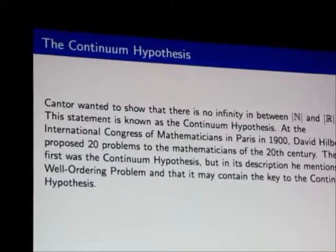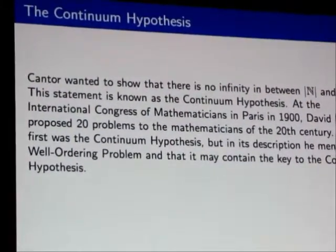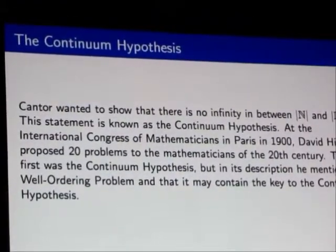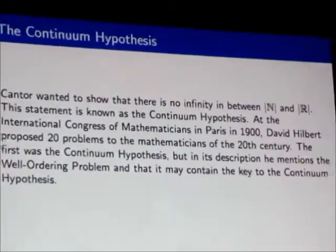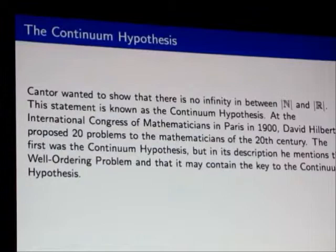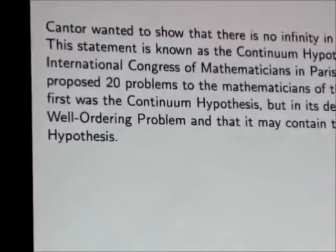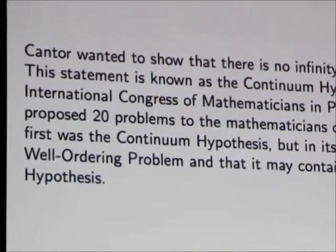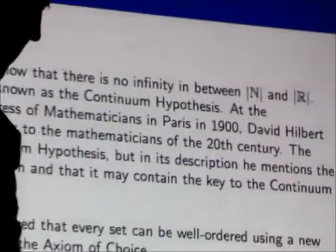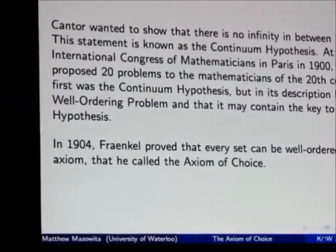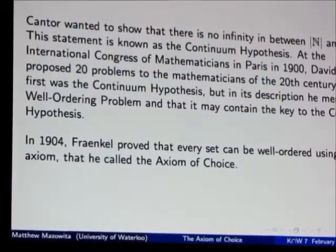Cantor wanted to show that there was no infinity strictly between the infinity of counting numbers and the infinity of real numbers. This statement is called the continuum hypothesis, and it was number one in Hilbert's list of 20 questions at the International Congress of Mathematicians in Paris in 1900. Hilbert was probably the best mathematician of his day. He remarks that he thinks that the well-ordering problem is the key to solving this continuum hypothesis.